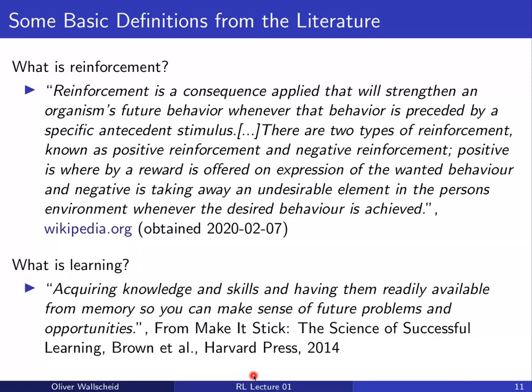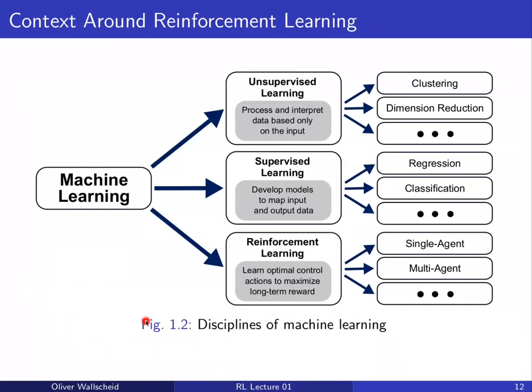Learning, the second term, is defined as acquiring knowledge and skills and having them readily available from memory so you can make sense of future problems and opportunities. The key buzzword here is memory — saving past observations and experiences as an agent in order to make better choices for the future to achieve certain goals. RL sits within the broader context of machine learning alongside unsupervised and supervised learning.